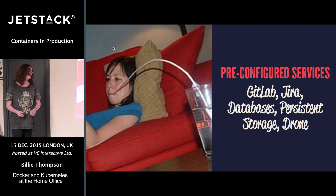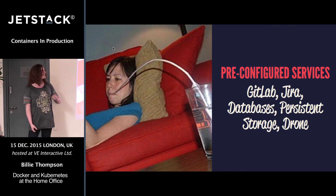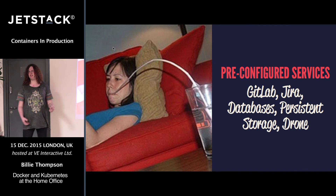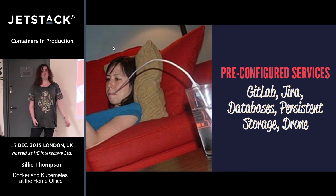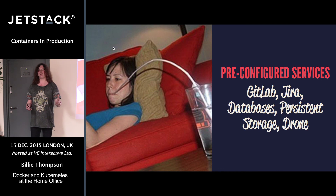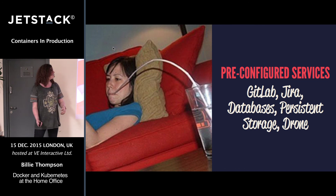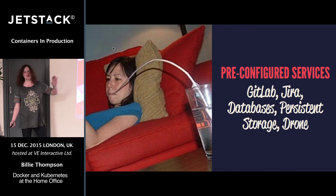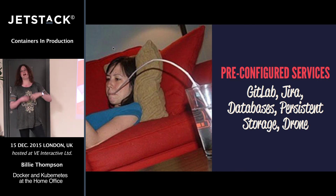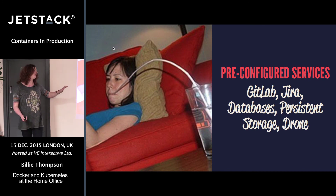Because we're thinking like a PaaS and we've got developers who don't want to deploy the same thing over and over again, we provide a whole bunch of pre-configured services just like AWS or Heroku do. We offer GitLab, Jira, databases, drone.io, and persistent storage — which is like S3 but a bit more secure because we're the government and have paranoid people in our offices. These are either YAML files and Docker containers we can start up, or services with a nice endpoint.